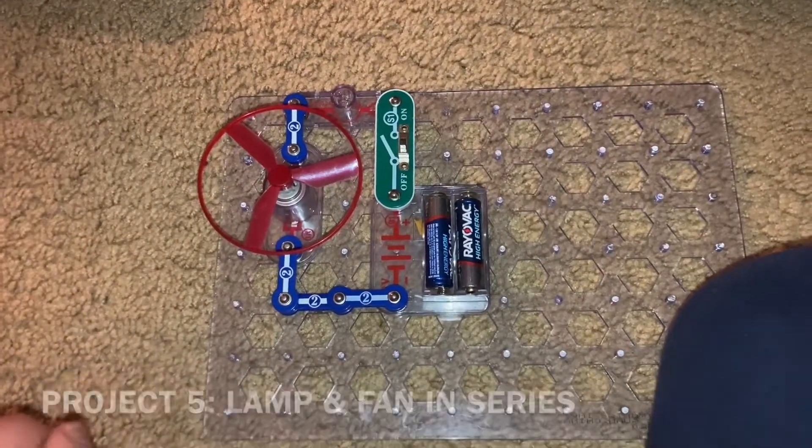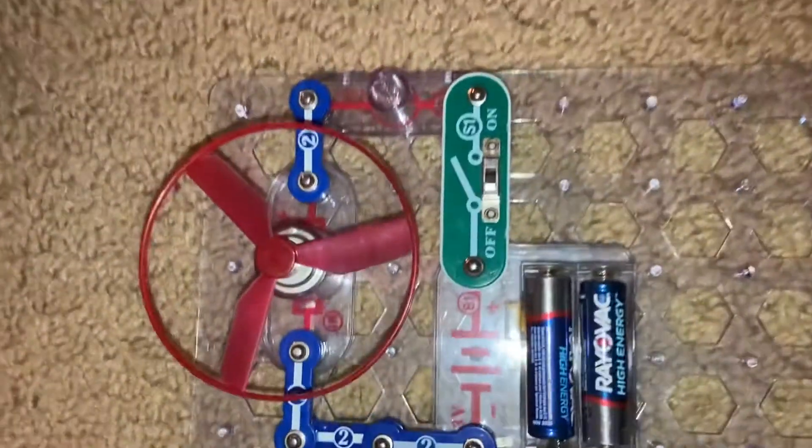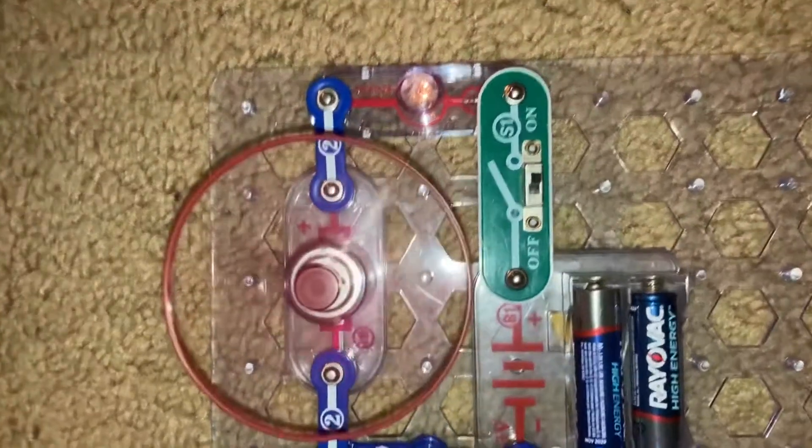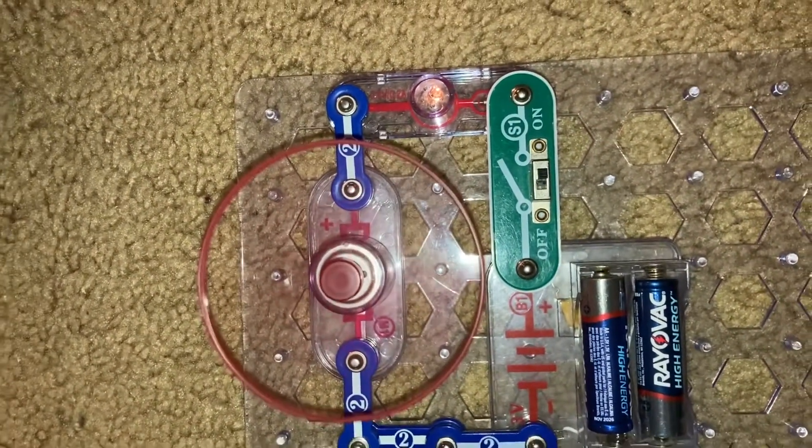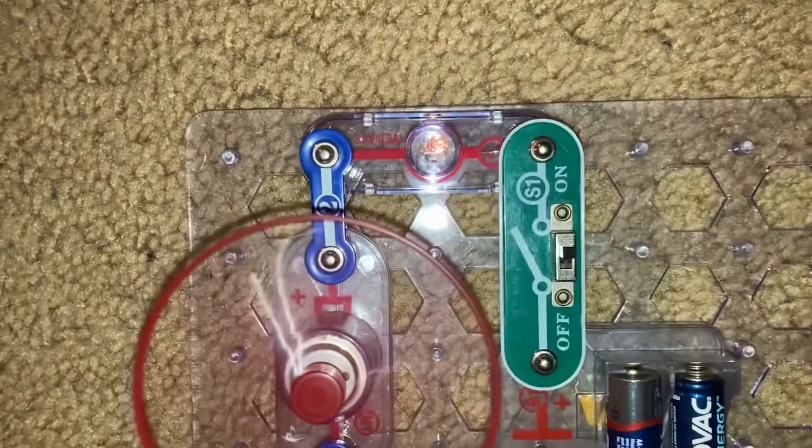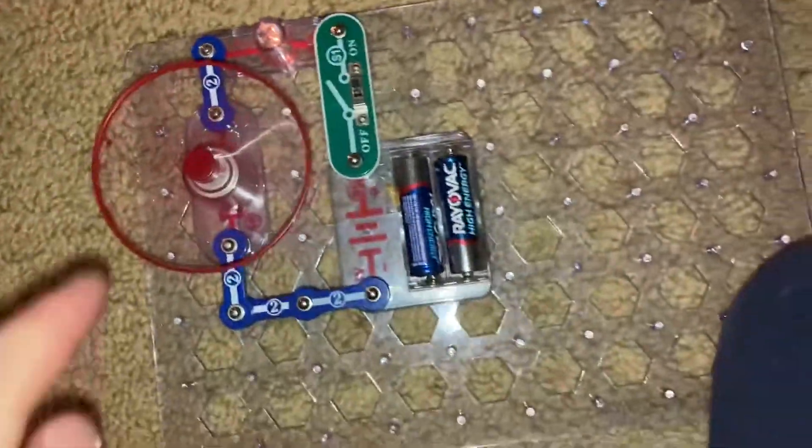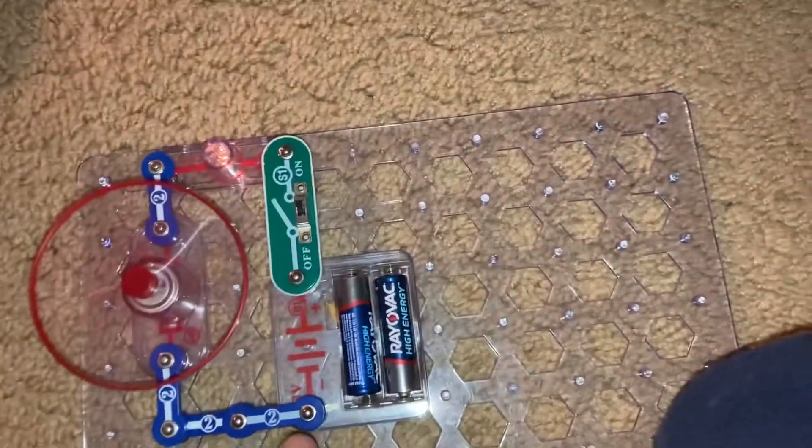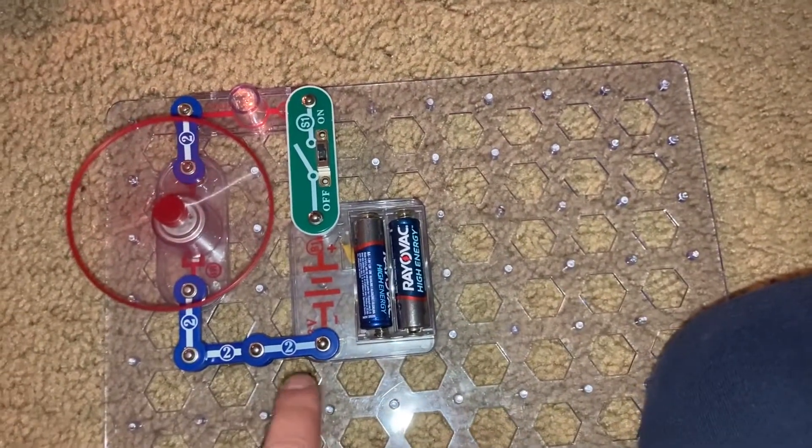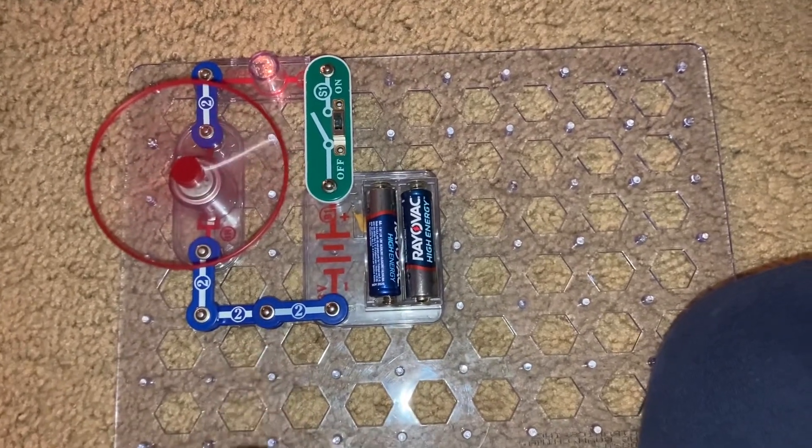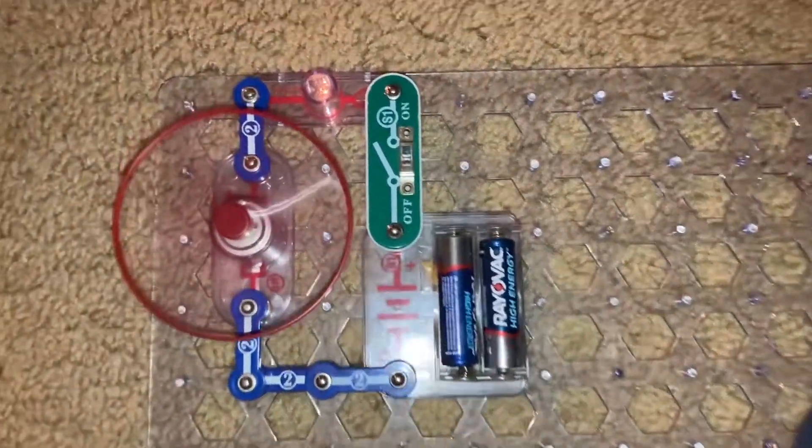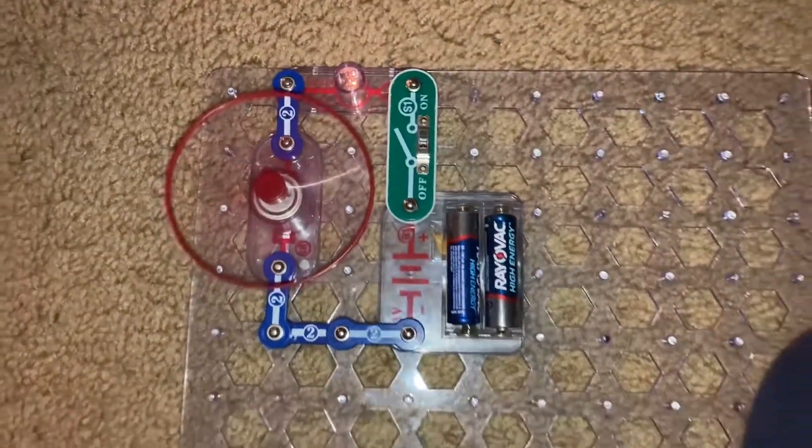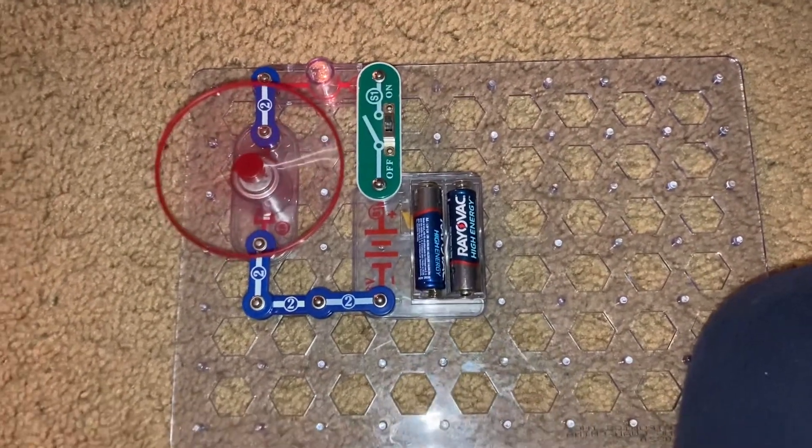Project five is lamp and fan in series. When I turn on the slide switch, the fan spins and the lamp comes on. You may not notice for the motor, but you'll see that the lamp is pretty dim. Both of these components are connected in series, meaning that they both share the same path for current to flow through. And therefore, the individual components cannot get full voltage.